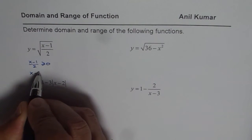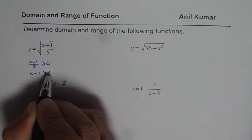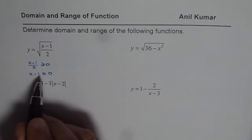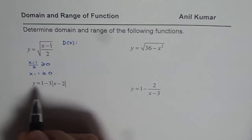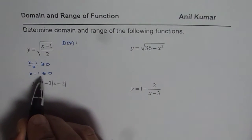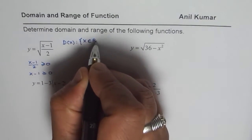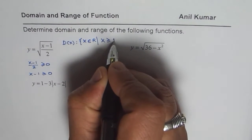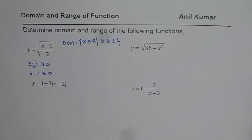That means x minus 1 should be greater than or equal to 0 — multiply both sides by 2, you get 0. And that gives us the domain. So we write: the domain is x belongs to real numbers, where x is greater than or equal to 1. Bringing the 1 to the right side, domain is x ≥ 1.